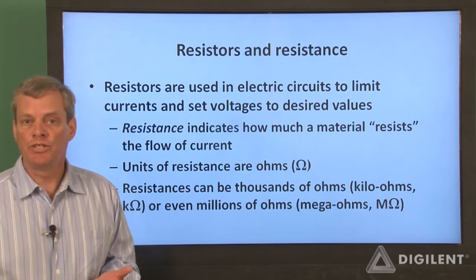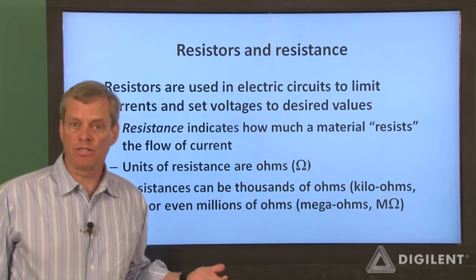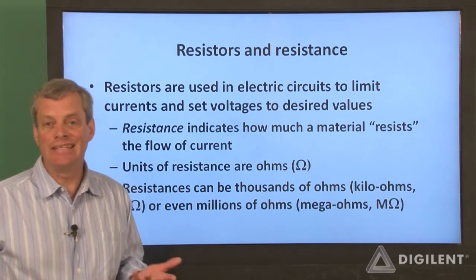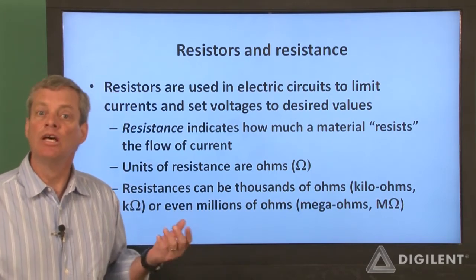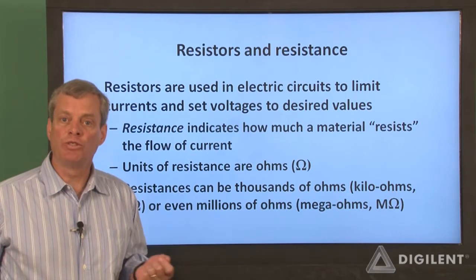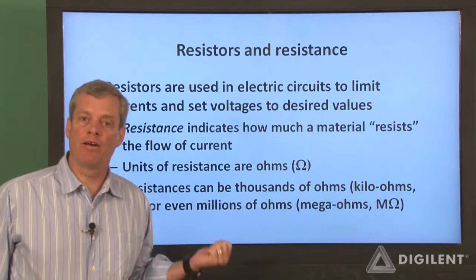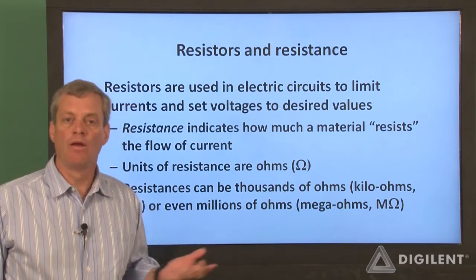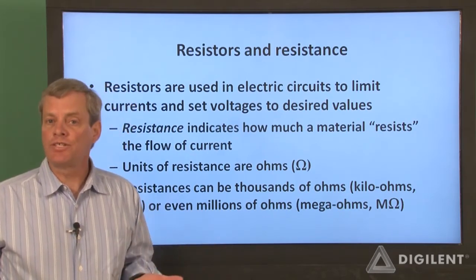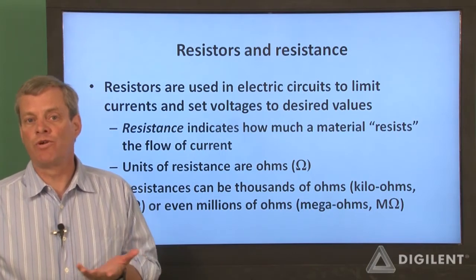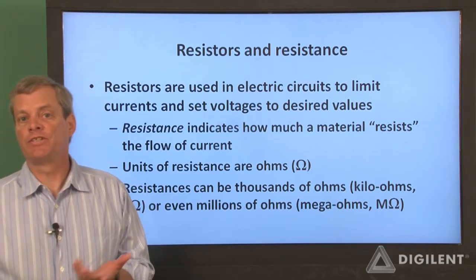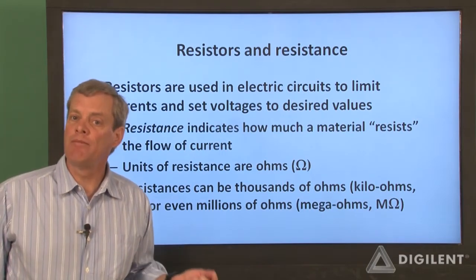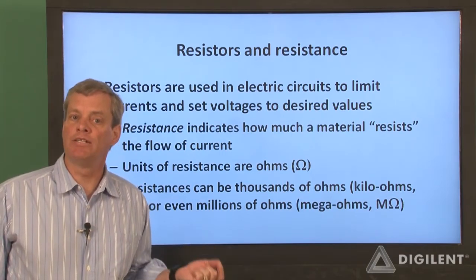Since voltage is used to cause current to flow, resistance corresponds, in some sense, to the amount of voltage required to move a given amount of current through a material. So less current flows through a high resistance than through a low resistance if the same voltage is applied to the two.